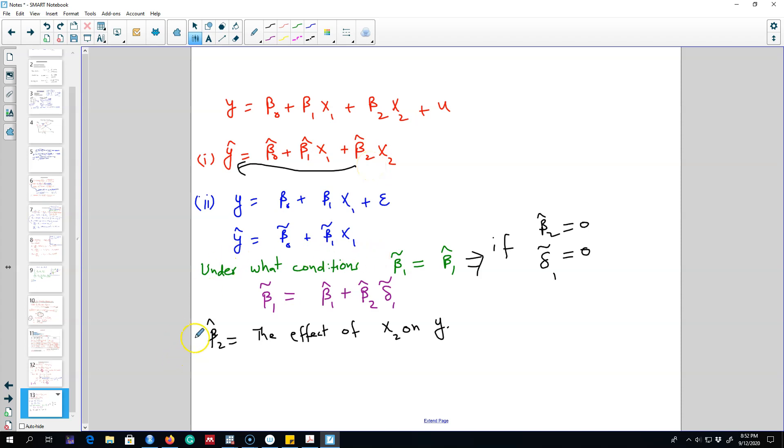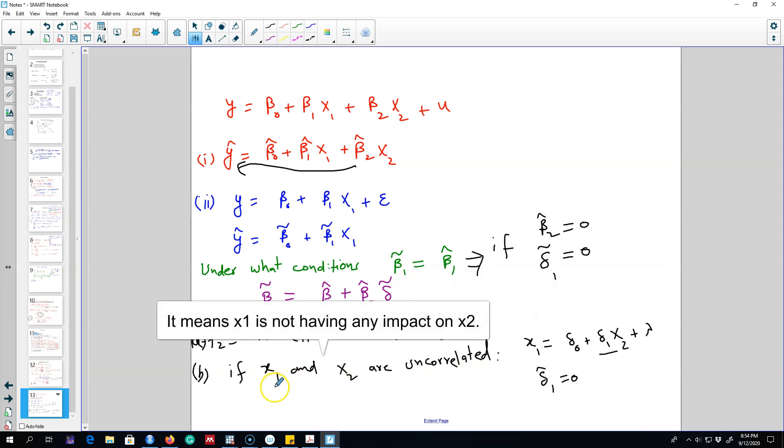The second condition is if x1 and x2 are uncorrelated. That is x1 equals delta 0 plus delta 1 x2. If we run this model and the estimated value of delta 1 is 0, it means x2 is not having any impact on x1. They are uncorrelated. So if this is the case then this model will give us the same parameter beta 1 as this model.